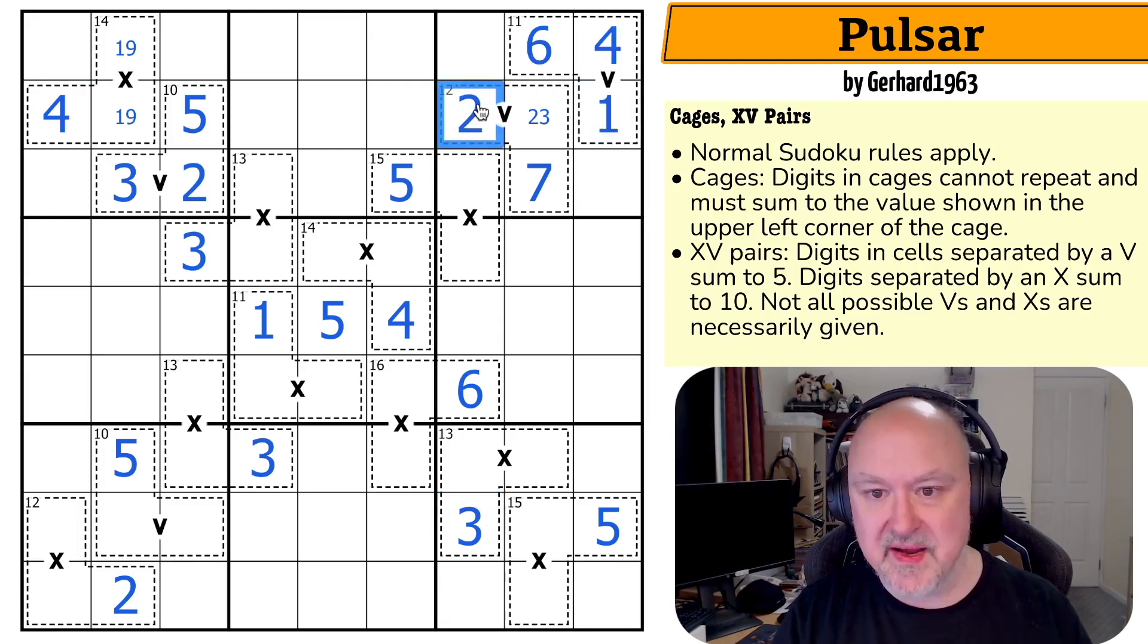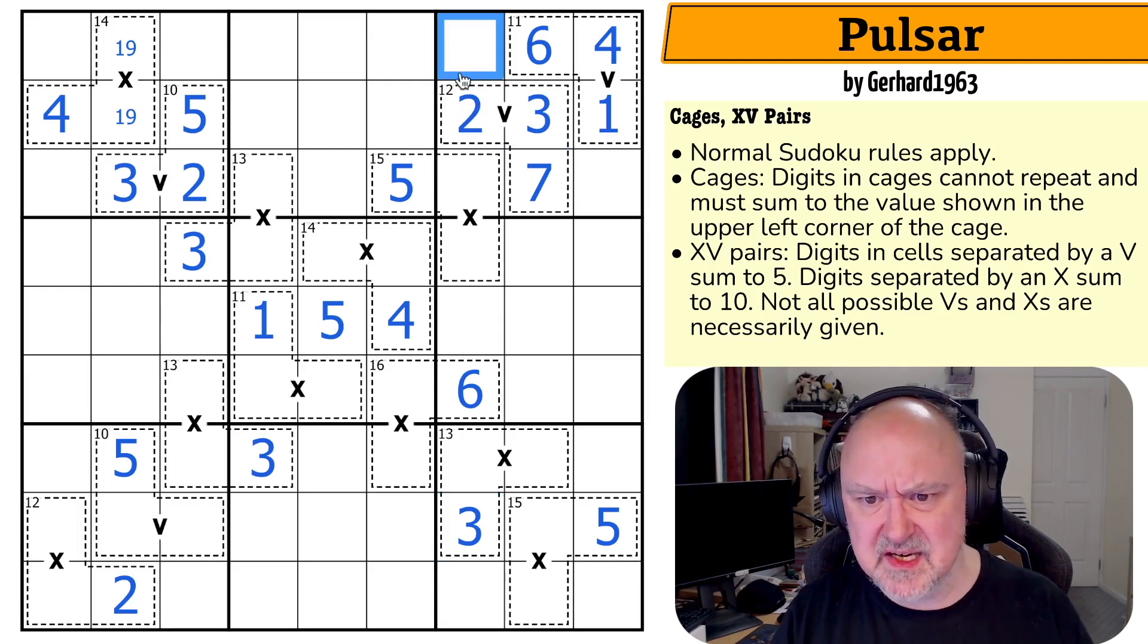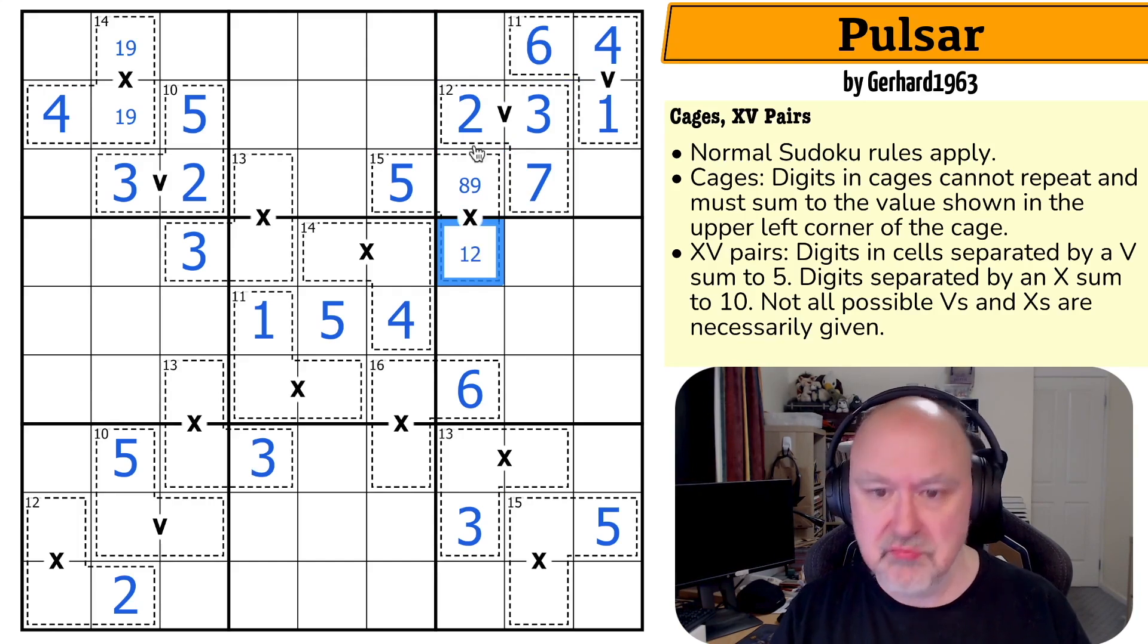This three is looking up, making that the two and that the three. These are fairly easy deductions, but they're fun. This has to be the high digit because one, two, three, four is gone. So this has to be eight or nine, which means this has to be one or two. But these are from five, eight, and nine. And this five is saying that's not the five. So this is the five.